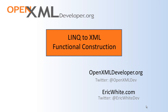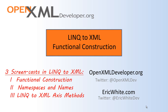Now that we've covered the semantics of XML, the next thing to cover is LINQ to XML. LINQ to XML is a programming API that enables these interesting types of transformations. There are going to be three screencasts on LINQ to XML. This first screencast is on functional construction. Following this, we're going to have a screencast on dealing with namespaces in LINQ to XML. And finally, we're going to talk about LINQ to XML axis methods, or LINQ to XML axes — those are synonyms.